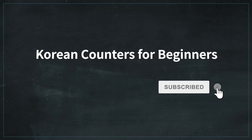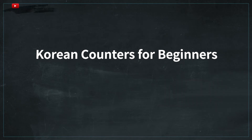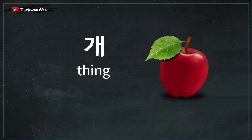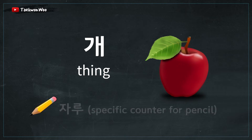Hello everyone, welcome to Korean counters for beginners. In this lesson, you'll be learning the Korean counter called 개. When counting inanimate objects in general, you could use this counter — such as apple. This can be translated as 'a thing' in English. Later on, we are also going to learn how to count inanimate objects more specifically.